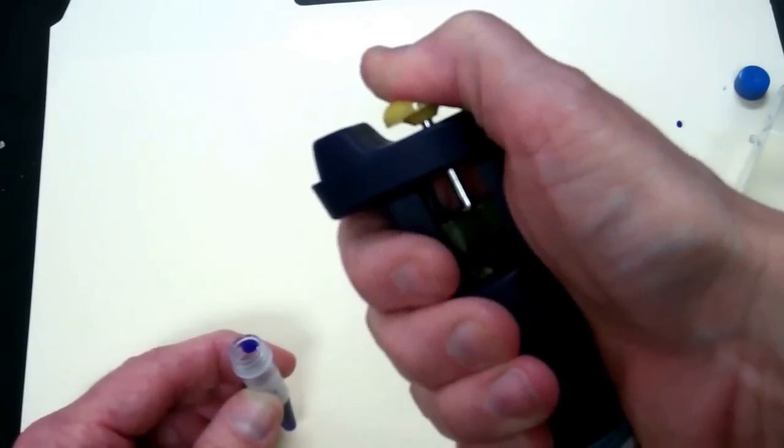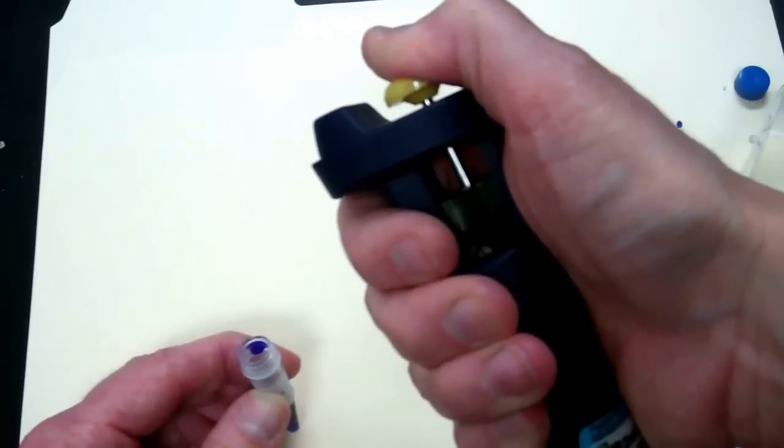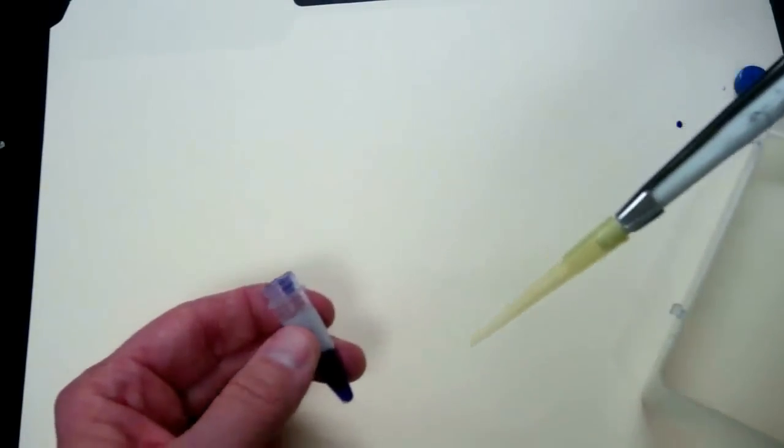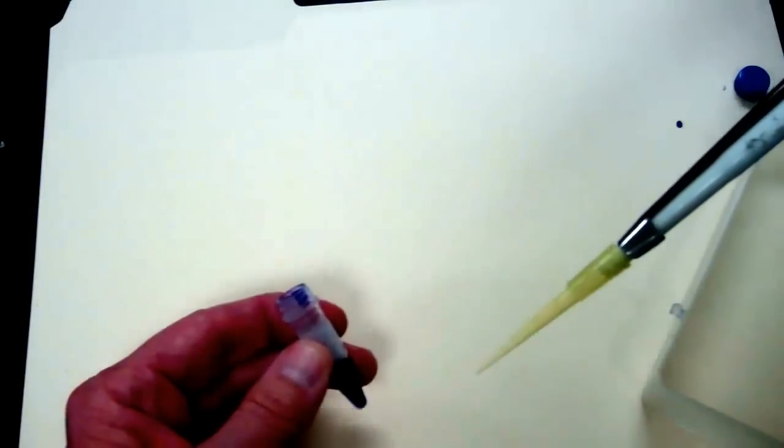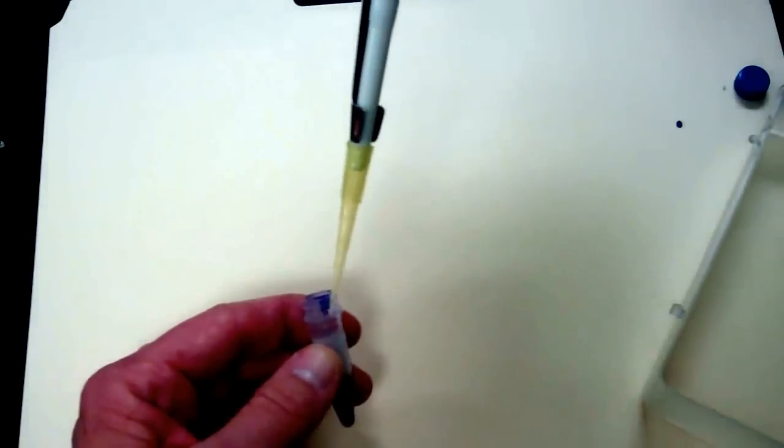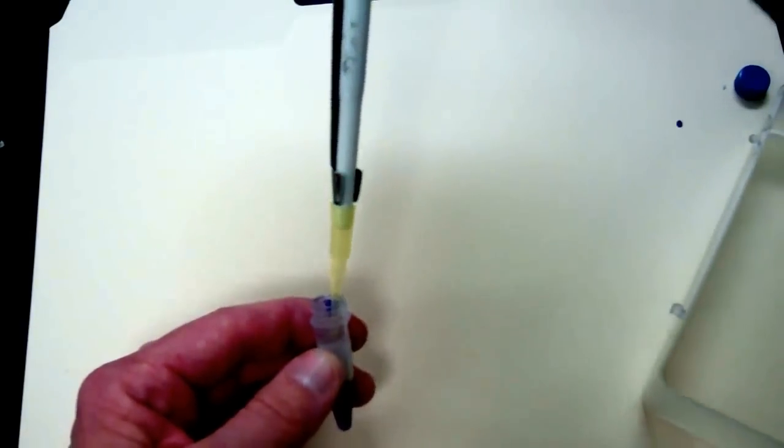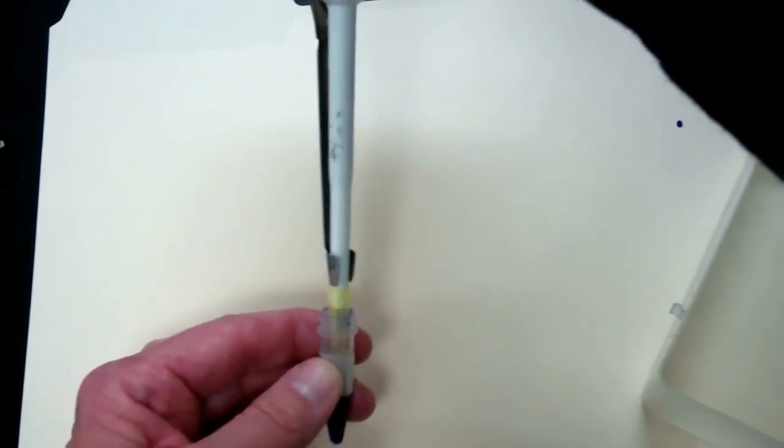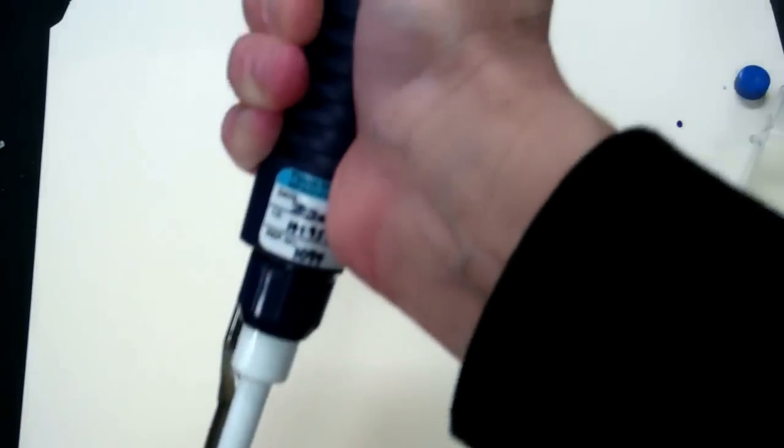Now I just pushed all the air out of my micropipette, and I want to immerse the tip into the dye. I don't want to put it all the way at the very bottom of my test tube, but I do want to immerse it. And once it is in the liquid, now I want to let go of my thumb.